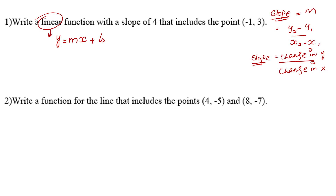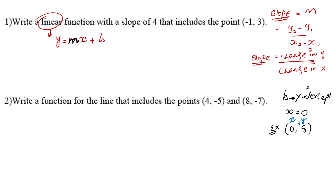We already know that m means slope. But what is b? b means y-intercept. The y-intercept is actually the place where the x value is 0. For example, if I have the point (0, 8), the first coordinate is x and the second coordinate is y. So when x is 0, y is 8, which means the y-intercept is 8.